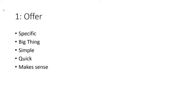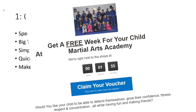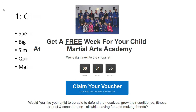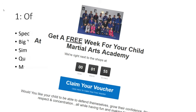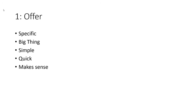So step one of three: we need an offer. An offer is something that is going to be specific. It's going to address the one big thing that they need solving. It's simple, it's quick, and it makes sense. For example, you will see on the screen now an offer that I put together. It allows people to understand exactly what it is they're going to get on the next page. It's clear, it's specific. This was for a martial arts client of ours. We've generated over a million pounds in sales using techniques and funnels like this.